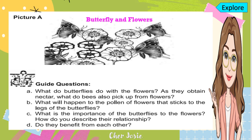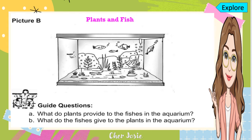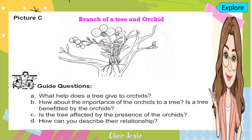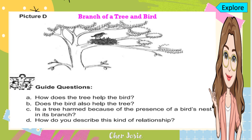Here is your first guide in answering your activity. Under picture A, we have the butterfly and flowers. For picture B, we have plants and fish. For picture C, it is a branch of a tree and an orchid. And for the last picture, picture D, it is a branch of a tree and a bird. Please answer the guide questions for each picture.